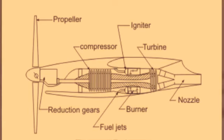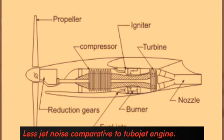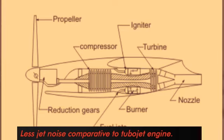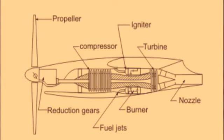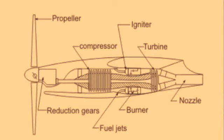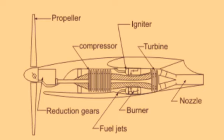The combustion products are discharged over the turbine. Those discharged gases strike the turbine blades, causing the turbine to rotate at high RPM, converting kinetic energy into useful work. That work drives the shaft connected to the propeller via the reduction gearbox, rotating the propeller. The exhaust gases then leave the engine at some velocity.